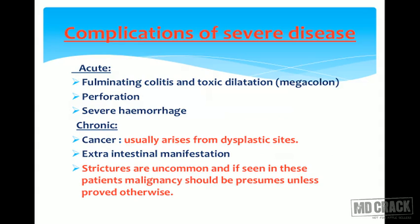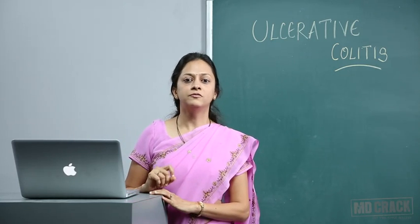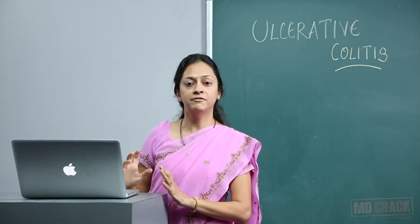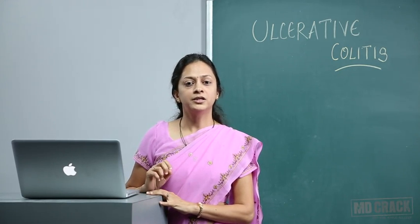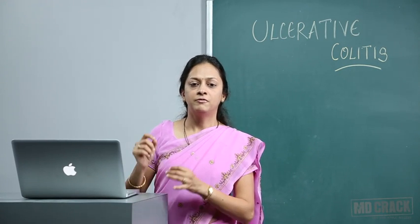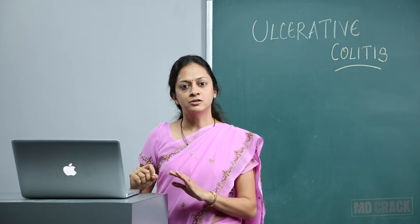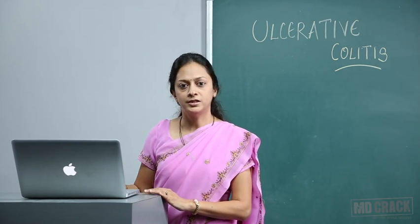Complications can be acute or chronic. Acute complications are fulminating colitis with toxic megacolon, perforation, or severe hemorrhage. Chronic complications include malignancy arising from dysplastic sites, extra-intestinal manifestations, and strictures — which are uncommon and if seen, malignancy must be ruled out. MCQ questions often ask you to identify which option is not a complication of ulcerative colitis.